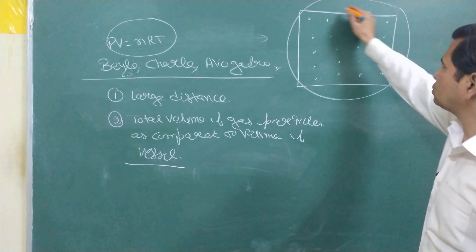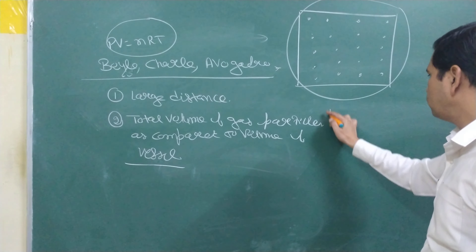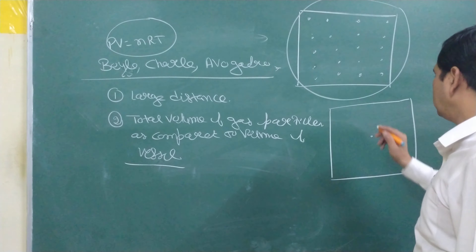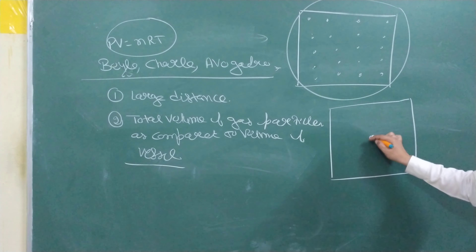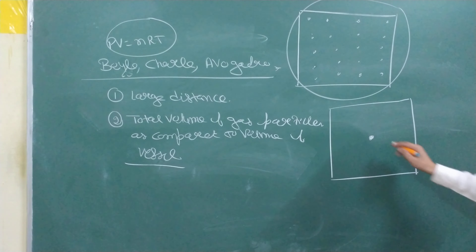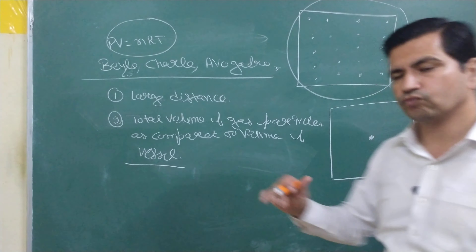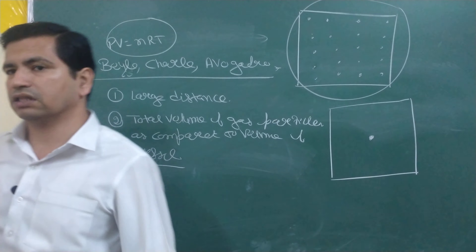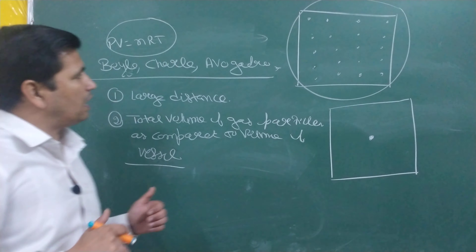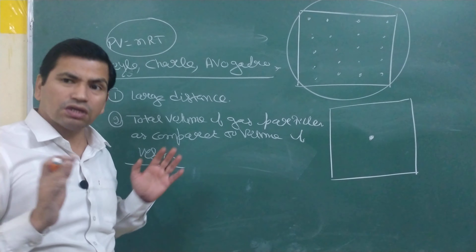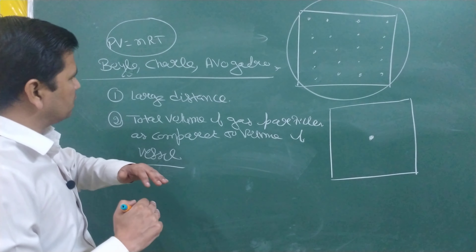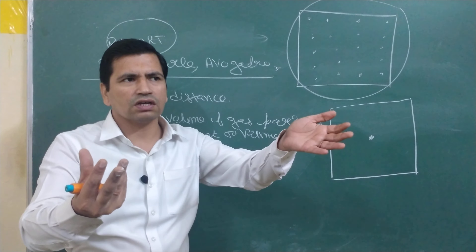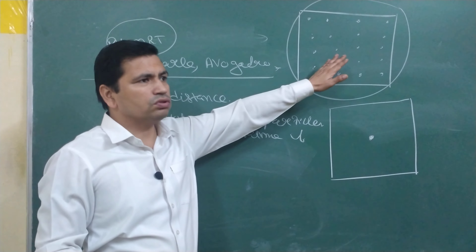PV = nRT was derived based on these two assumptions. Now notice: if your temperature is very high and pressure is low, these conditions are satisfied because at high temperature, particles have high kinetic energy, the force of attraction between them is weak, and they are moving freely. And since pressure is low, the particles are spread far apart.